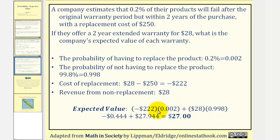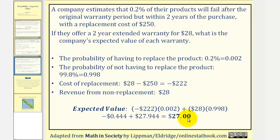The first product comes out to negative $0.444. The second product comes out to $27.944. Finding the sum, the expected value is $27.00. This means as they sell more and more warranties, the expected value, or extra revenue, would be $27.00 per warranty sold.